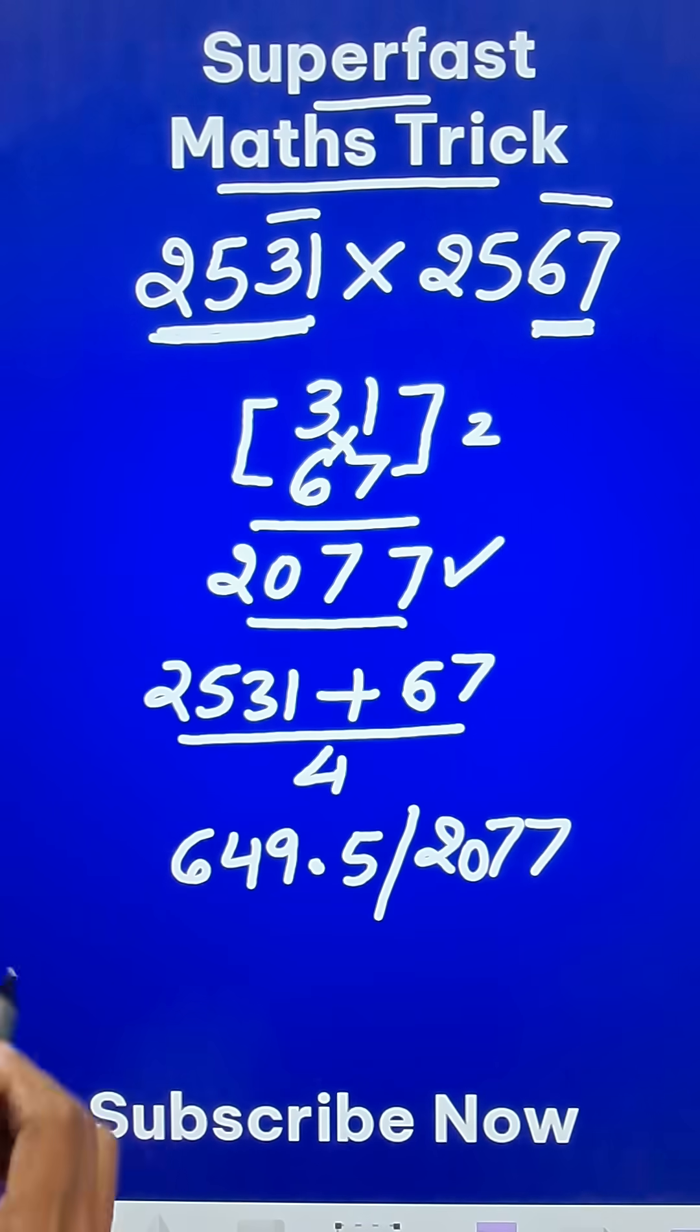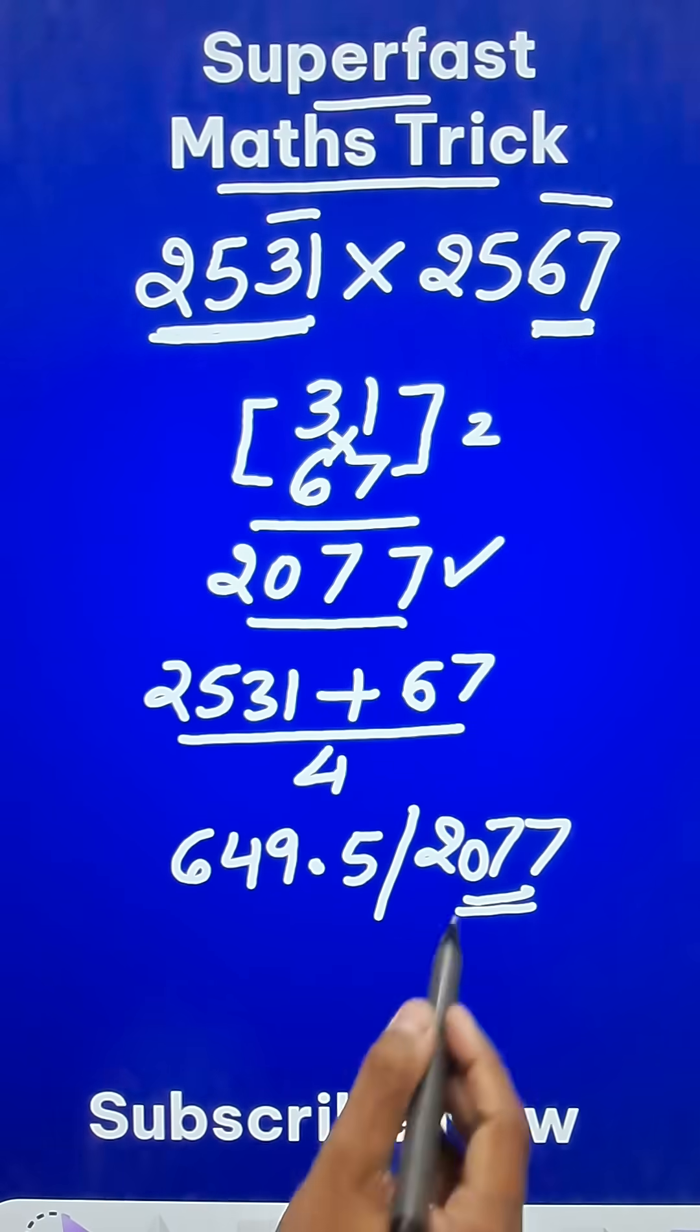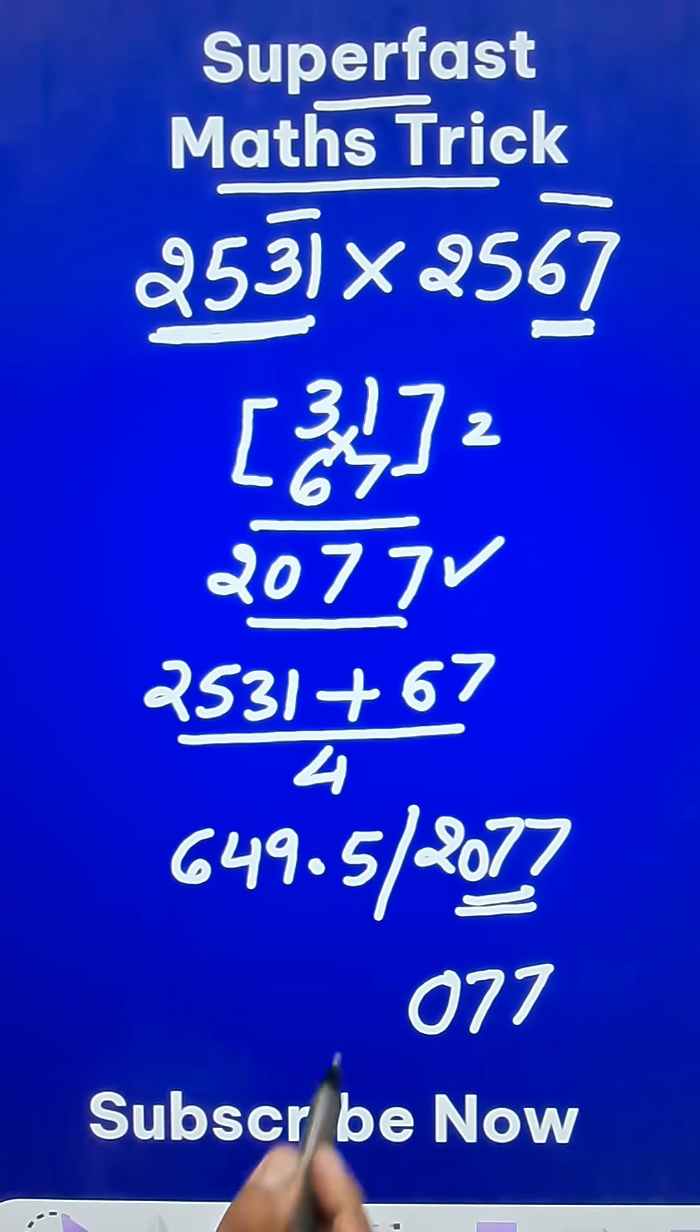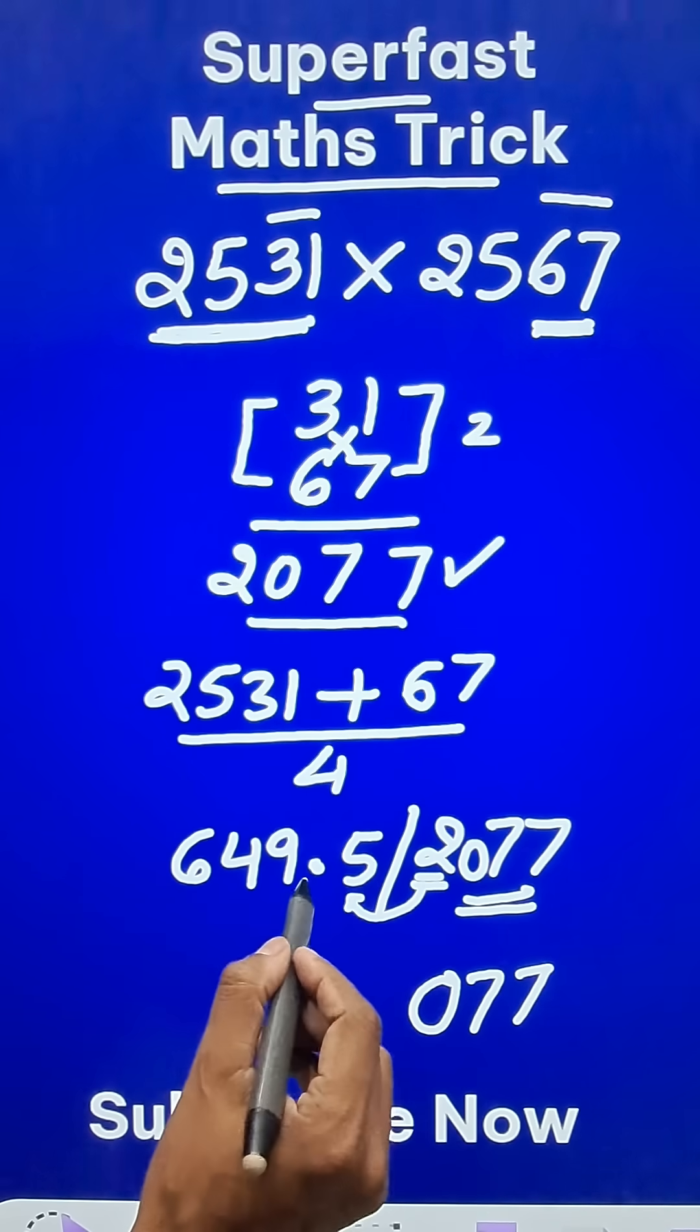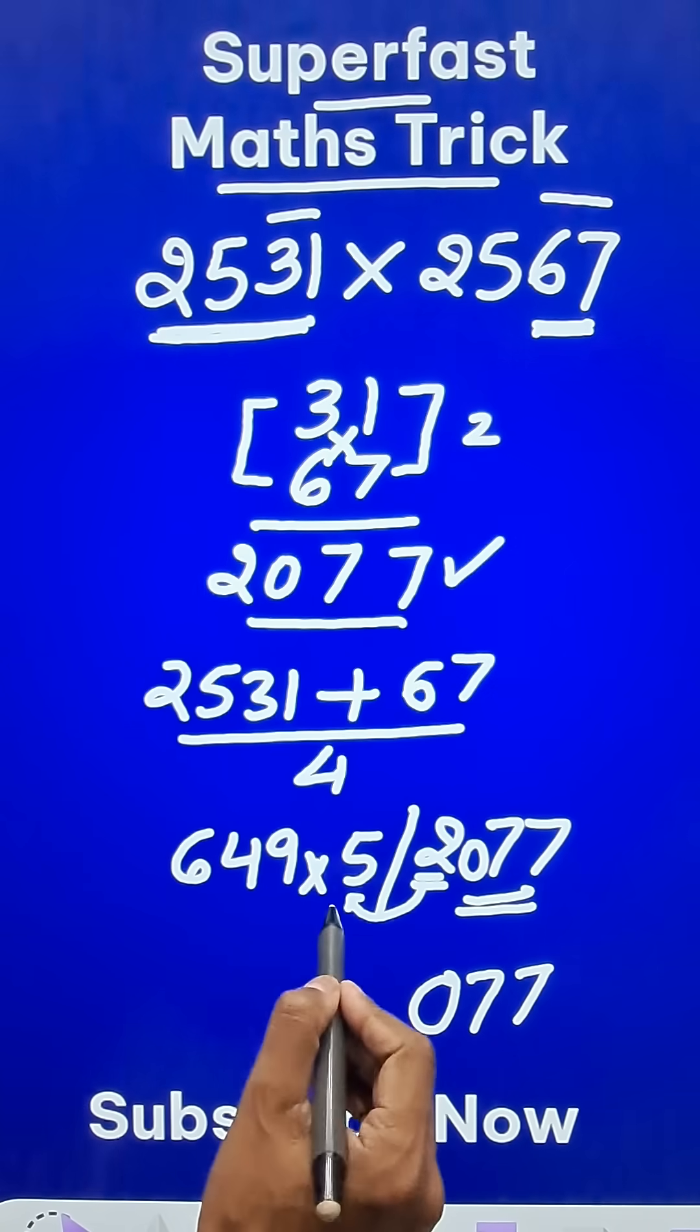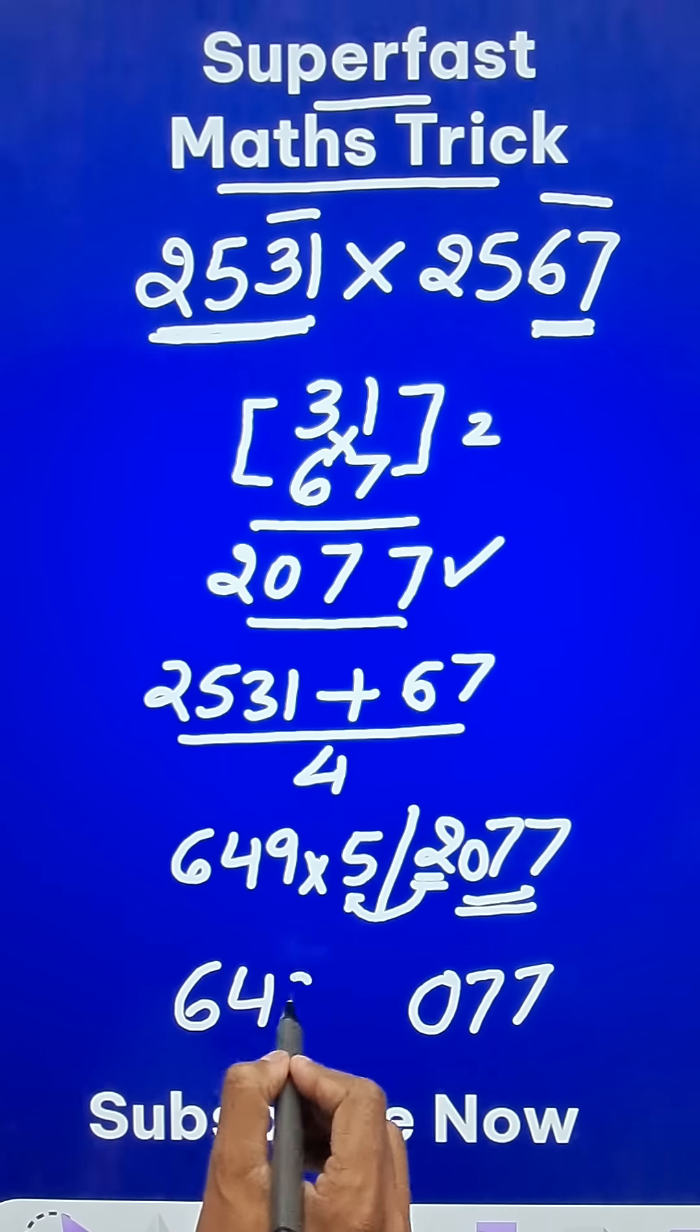Now what do we do with these numbers? Retain the last three digits in the product. So 077 that will be the last three digits of your answer. And this 2 is to be carried forward here, and ignore the decimal in this number. So 6495 plus 2 is 6497.